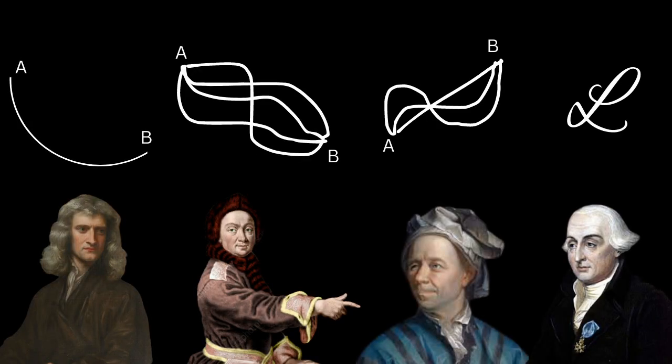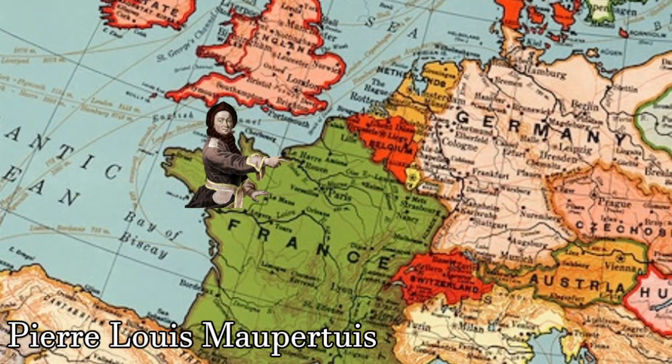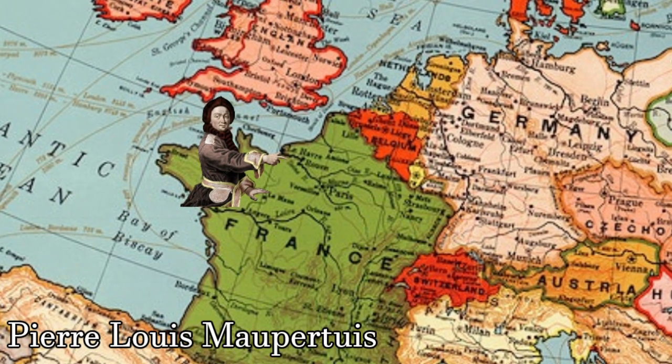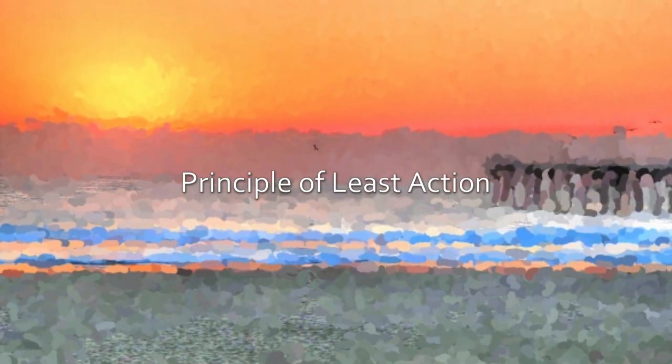This simple statement will become one of the most important ideas in the history of physics. Pierre-Louis Maupertuis extended Fermat's idea to an elegant yet too simple to believe generalization, called principle of least action.